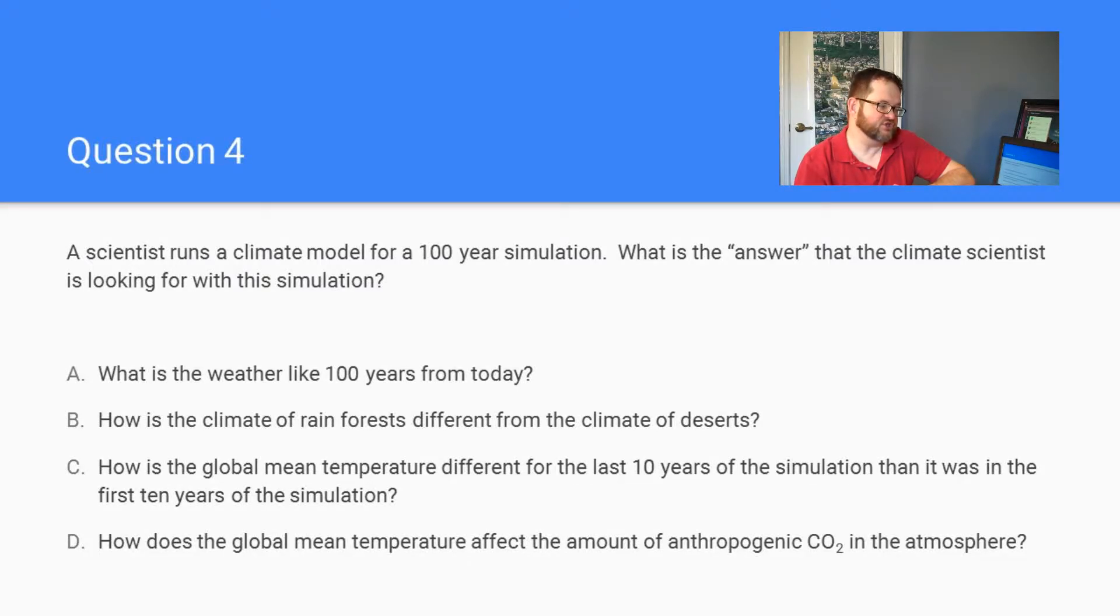C. How is the global mean temperature different for the last 10 years of the simulation than it was in the first 10 years of the simulation? Or D. How does global mean temperature affect the amount of anthropogenic carbon dioxide in the atmosphere?